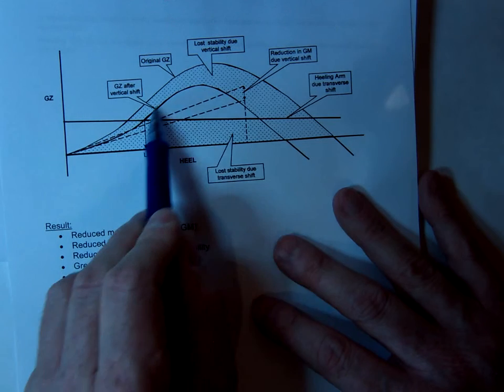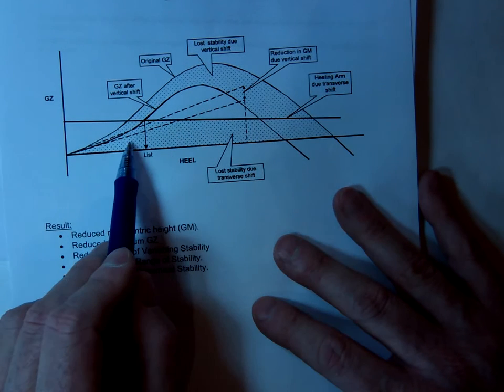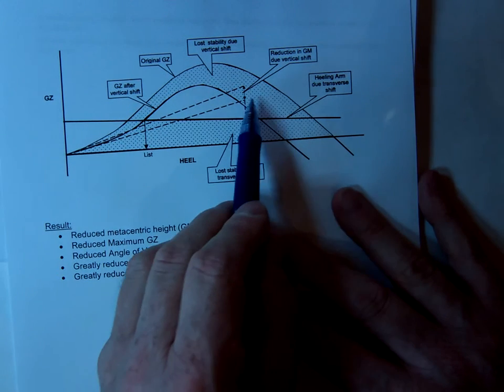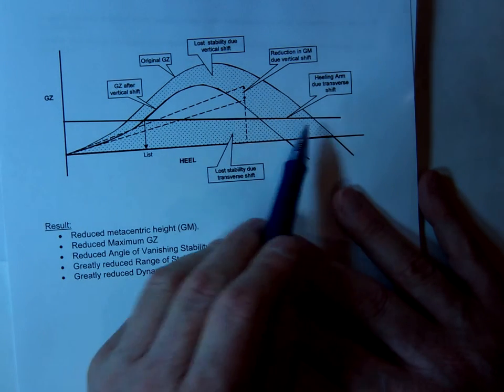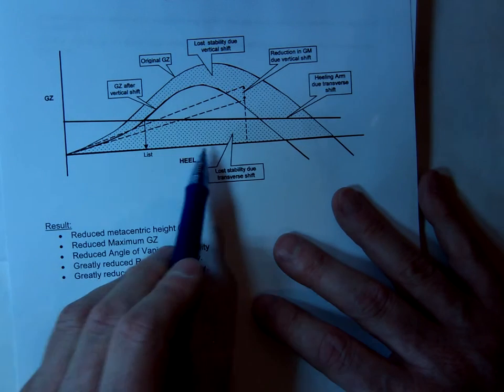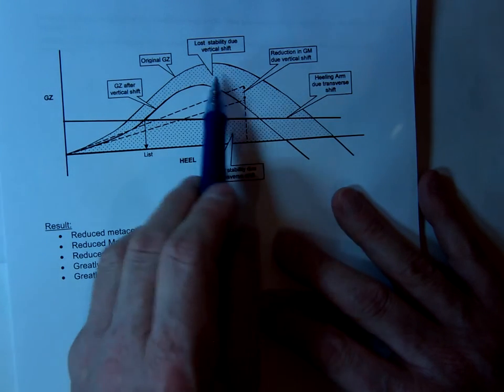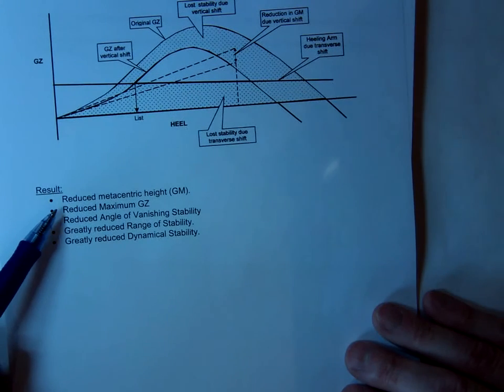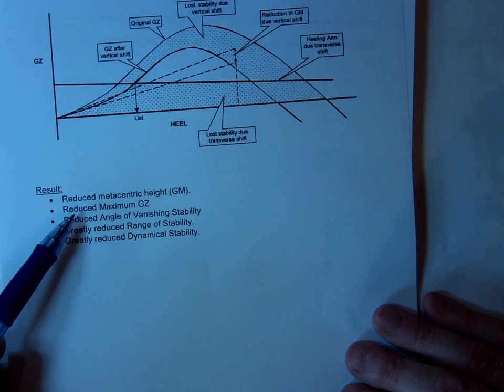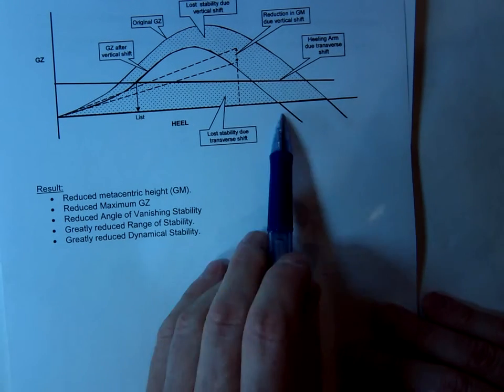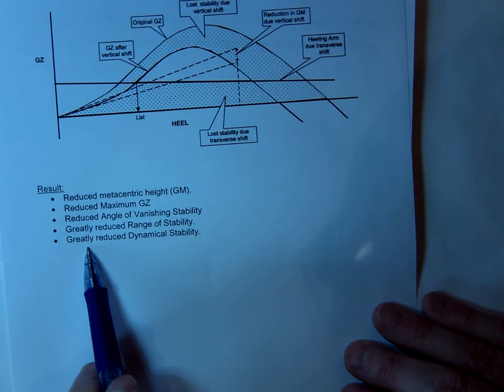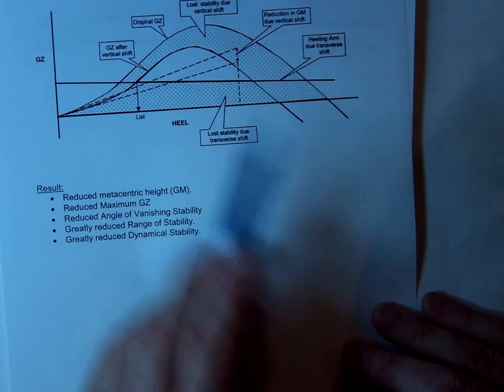So we've lost all the stability. All the dots represent stability that we've lost. Because if you like, it's a double blow. The GM is reduced, and a healing arm curve is introduced due to the transverse shift. So we've two lots of stability that we've lost. So as it says here, the result is a reduced GM, reduced maximum GZ, reduced angle of vanishing stability, and greatly reduced range of stability. And of course, greatly reduced dynamic stability.